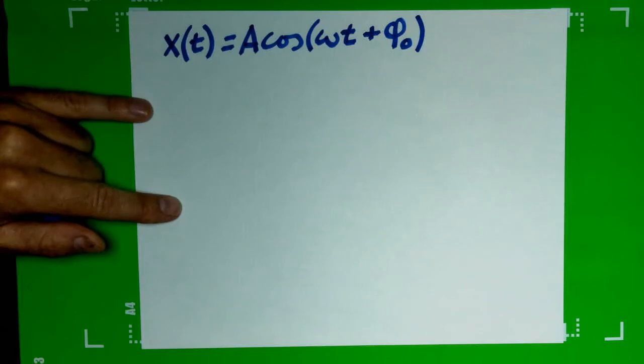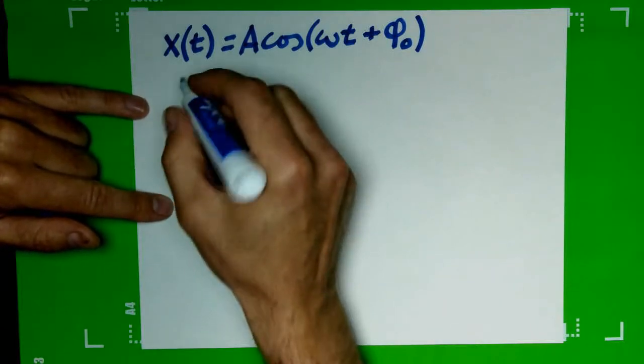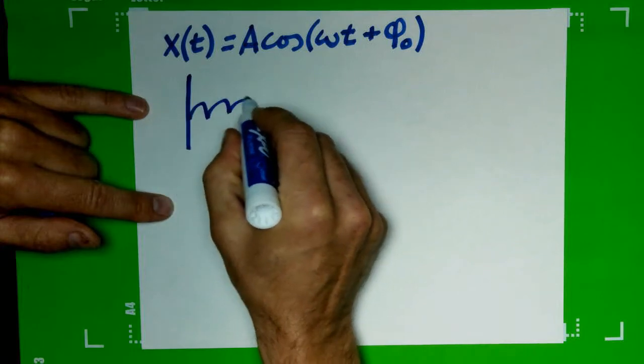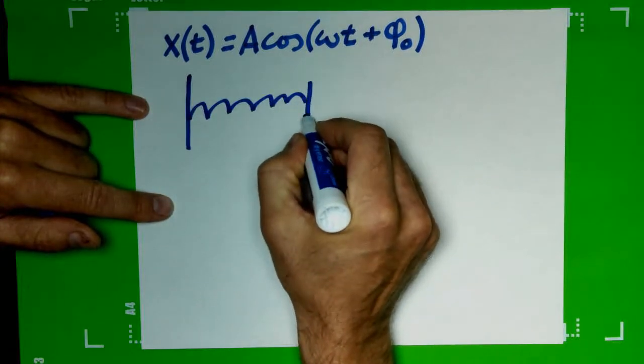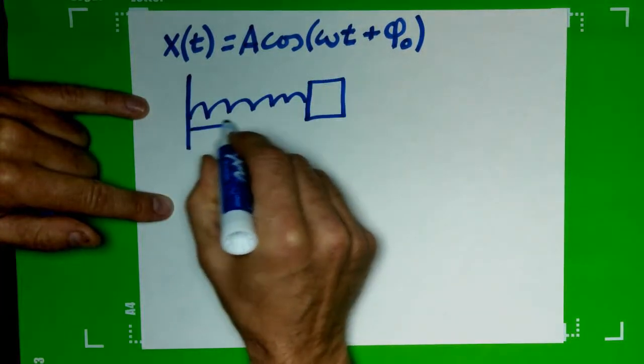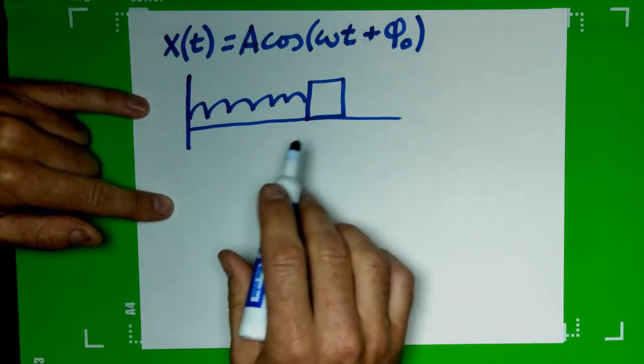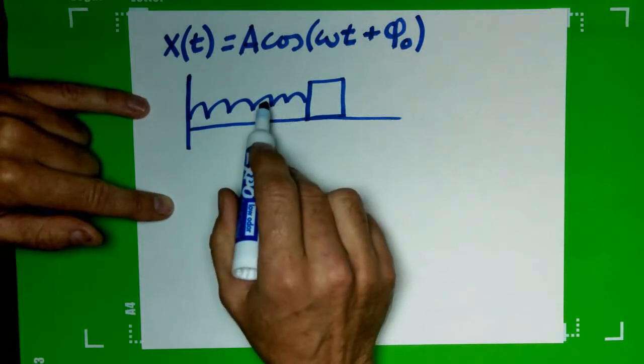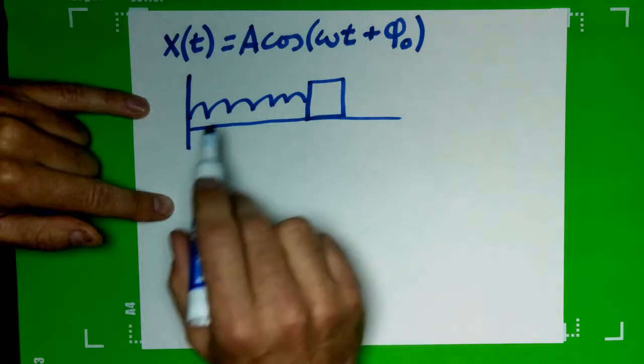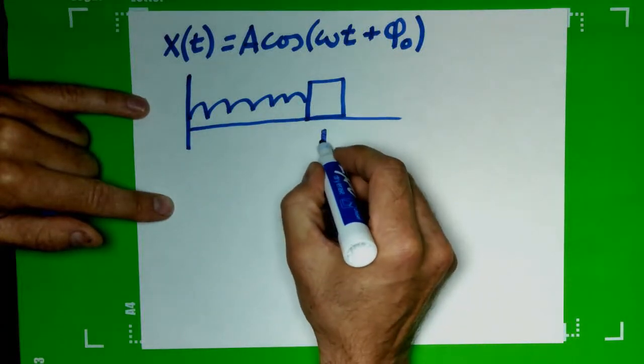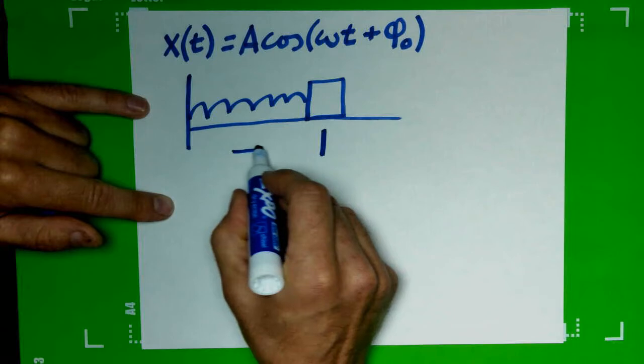Okay, so if we imagine a block on a spring, here's my spring, here's my block sitting on a table. Let's just assume that the table is frictionless to start, so all we have to worry about is the force of the spring pushing and pulling on that block causing it to oscillate side to side.